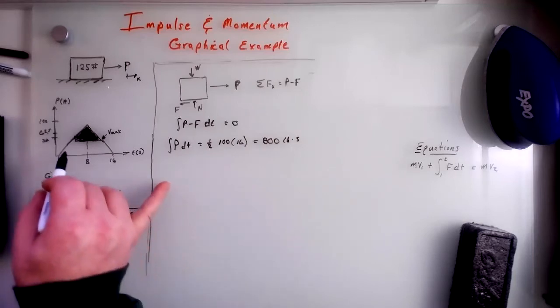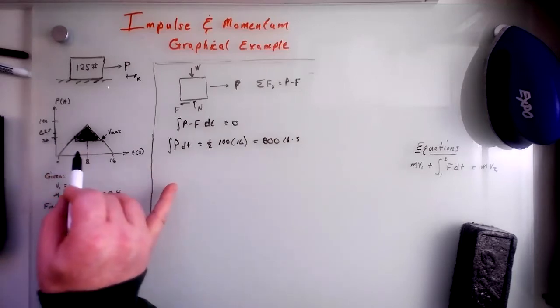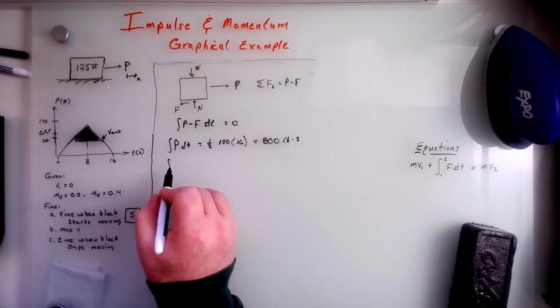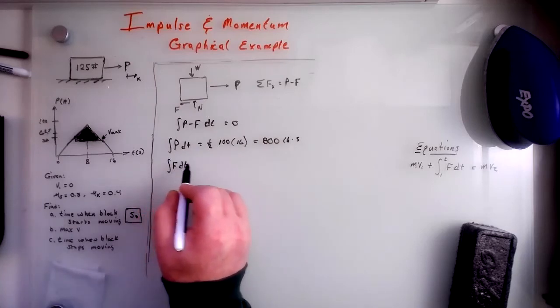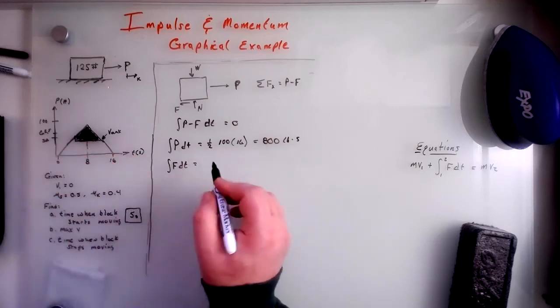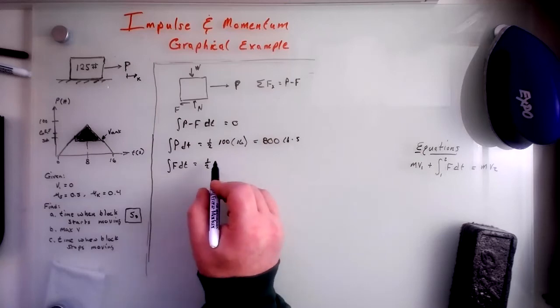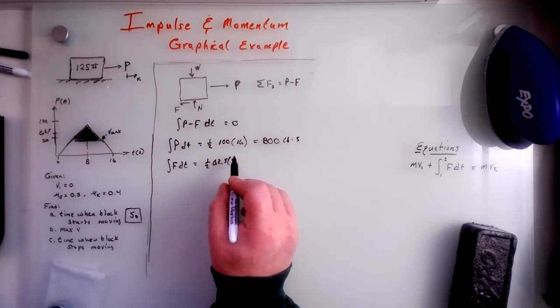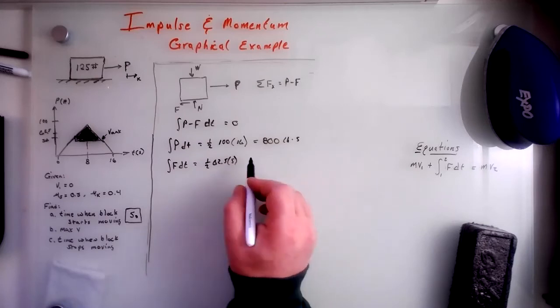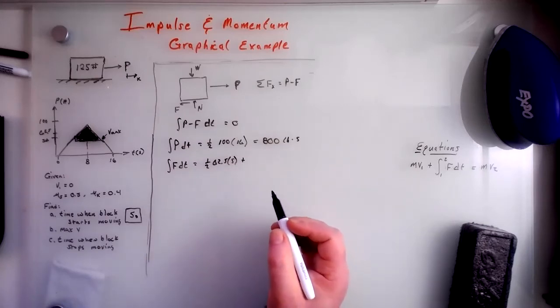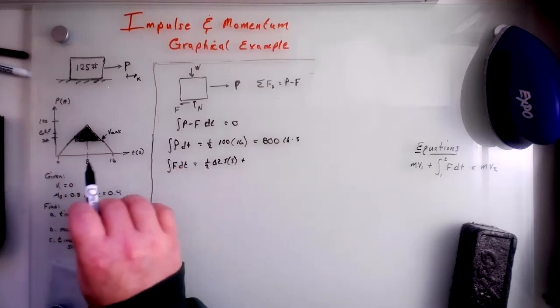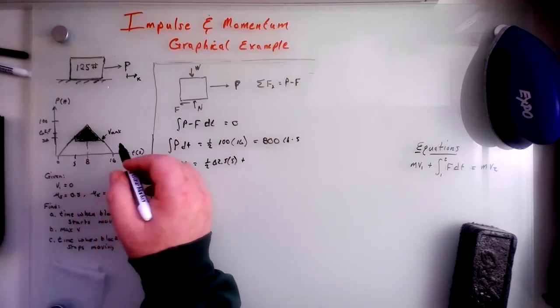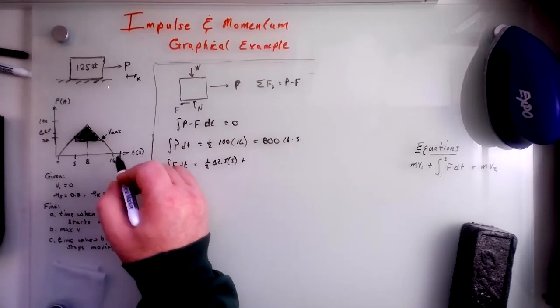And F, well, we have two parts of F, right? We have the part where nothing is moving. And then we have the part that goes out until it stops. So let's see. F, say F DT here. And that's going to be equal to this first triangle. So one half of 62.5 times five seconds, right? Because that's how long it took to get things started. Then plus, then from here to the end, and we don't know how long the end is. So it's going to be the distance from five to say, I don't know, it's going to be past this, I'd imagine. So let's say T the end, right? T E.